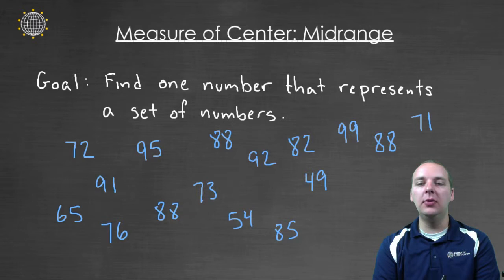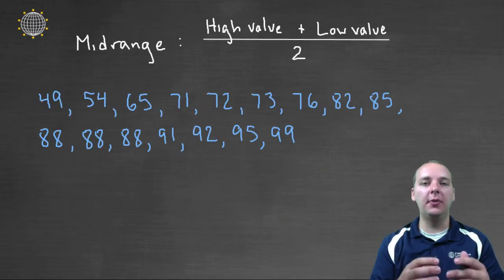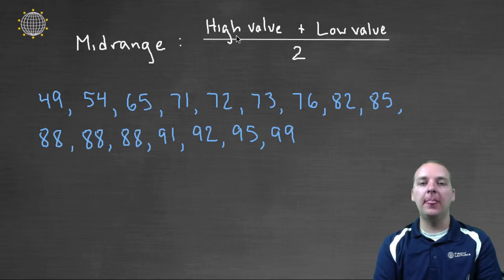Well, we're talking about the midrange. The midrange is probably one of our most crude measures of center. We simply take the high value and the low value and we average the two.